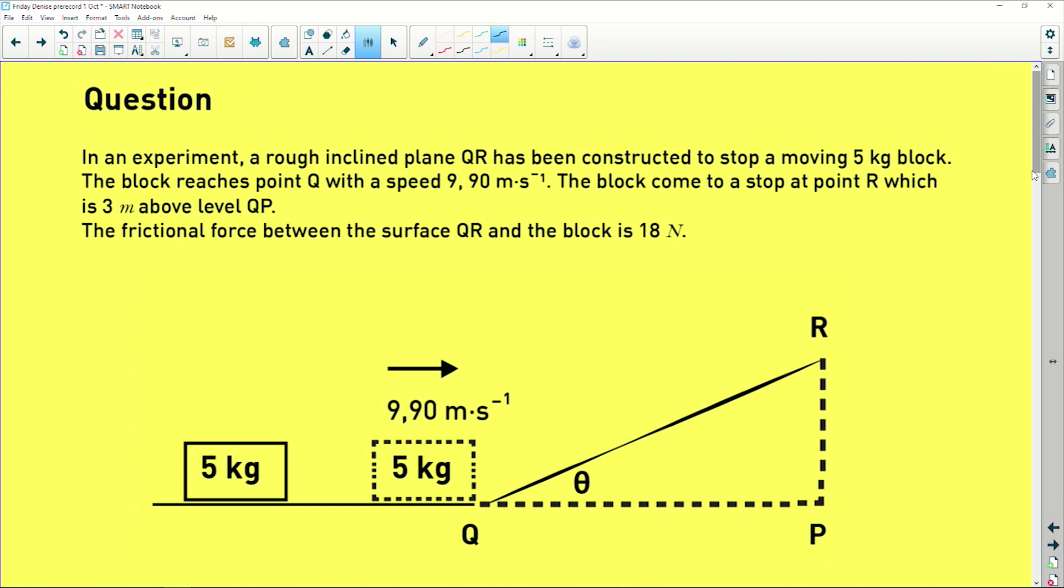So if we look at this question, it says we've got an experiment with a rough inclined plane. What does that mean? It means there is friction. If you see this word rough, you know there is friction between Q and R, and it's been constructed to stop this block, five kilograms, as it's moving up the slope. So this block is moving up and it goes a certain distance where the final velocity here is going to be zero. So it's going to be brought to a stop.